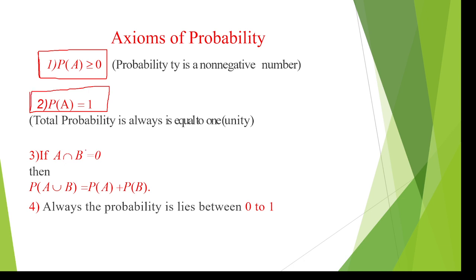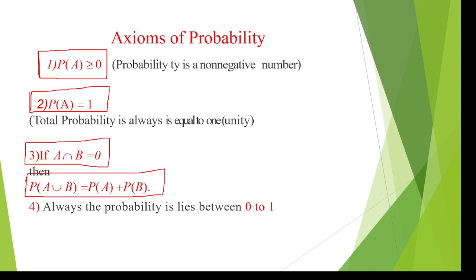The third axiom is: if there is no common probability between events A and B — that is, A intersection B equals zero — then the joint probability to get A or B is equal to the probability of A plus probability of B minus zero, which simplifies to probability of A plus probability of B. The probability always lies between zero and one.